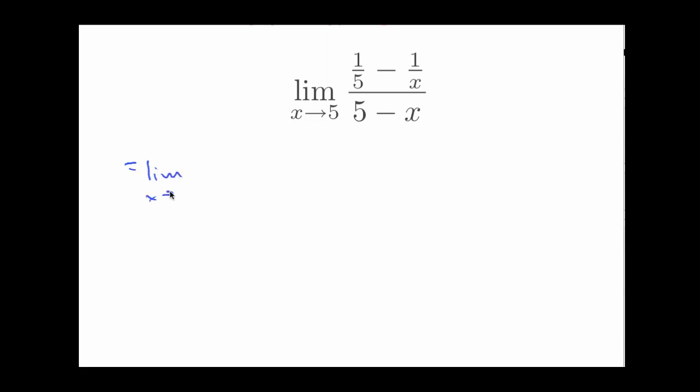Limit as x goes to five of something over five minus x. Now, again, what I'm doing here is I'm going to perform the subtraction that's in front of me up here on the top. To subtract fractions, of course, I need common denominators, and the common denominator is going to be five times x. So the first fraction is x over 5x, and the second fraction is five over 5x. Now let's just carry this forward as far as we can and see what happens.